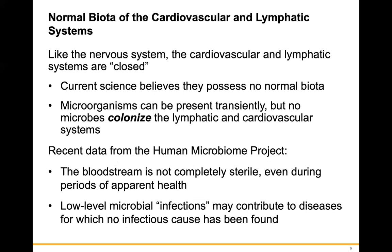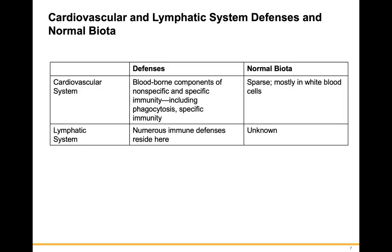Regarding normal microbiota of the cardiovascular and lymphatic systems: like the nervous system, these are closed systems, and current science believes they possess no normal microbiota. Microorganisms can be transiently present, but no microbes colonize these systems. However, recent data from the Human Microbiome Project suggests the bloodstream is not completely sterile even during apparent health, and low-level microbial infections may contribute to diseases for which no infectious cause has been identified. These are also referred to as sterile sites.